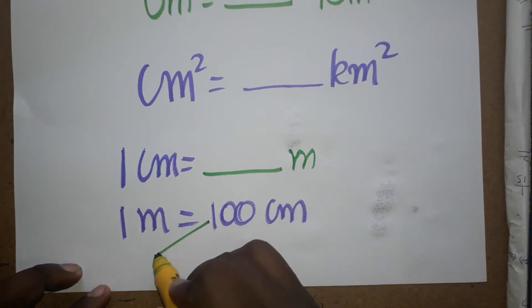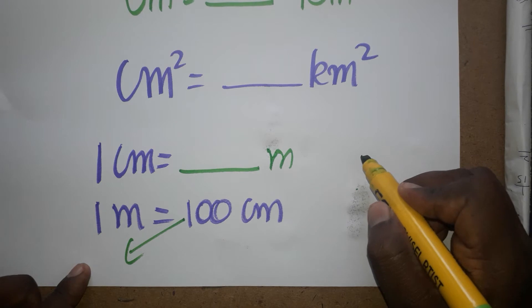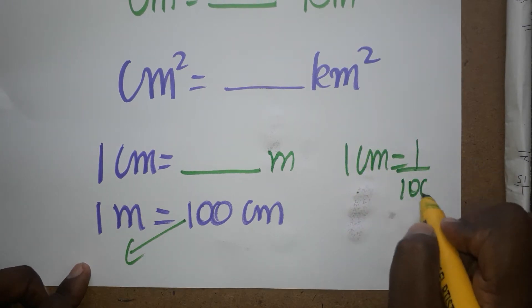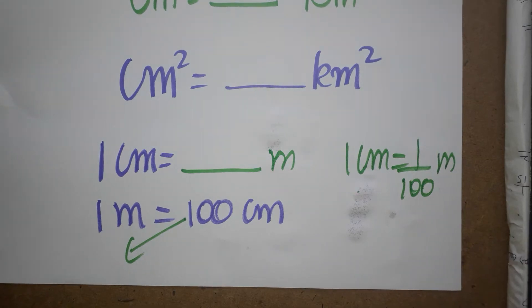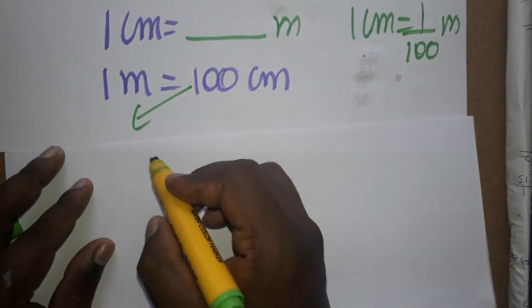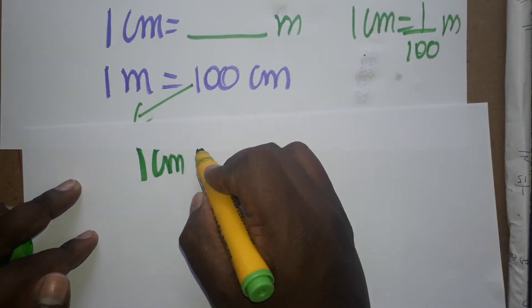So this 100 I am bringing as a denominator. So I will get 1 cm equals 1 divided by 100 m. We can write 100 as 10 power 2, so 1 cm is 1 divided by 10 squared m.